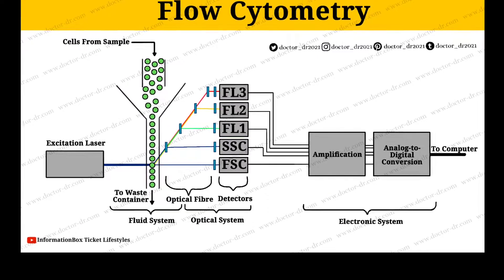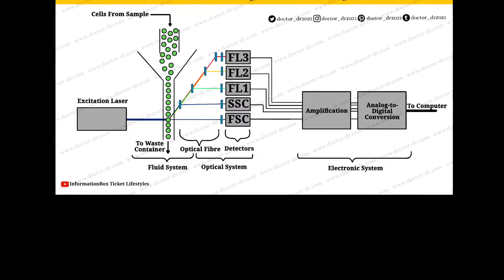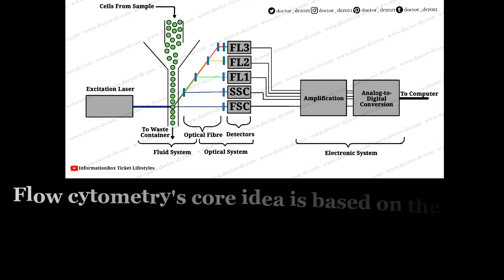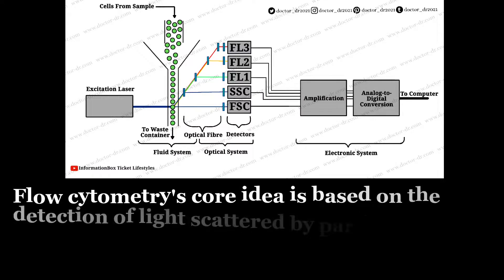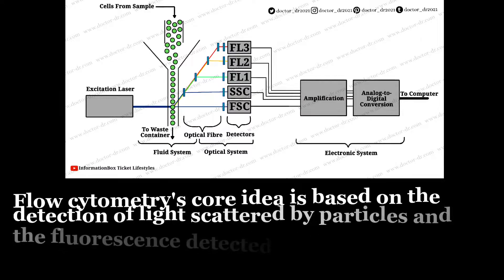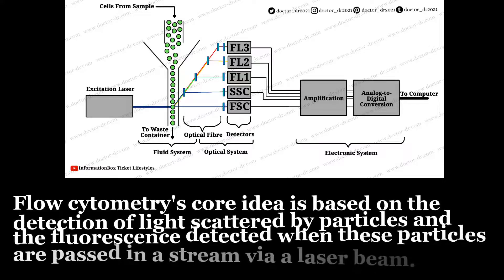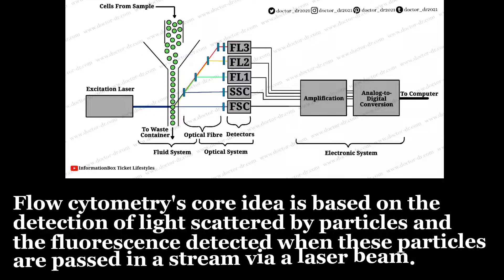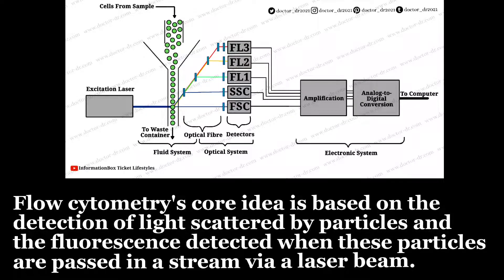Now we will discuss the principle of flow cytometry. Flow cytometry's core idea is based on the detection of light scattered by particles and the fluorescence detected when these particles are passed in a stream with the help of a laser beam.